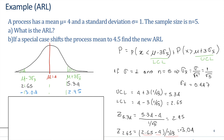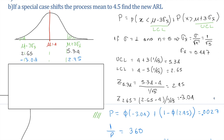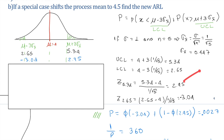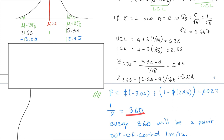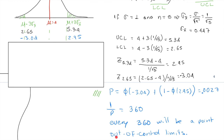The z-value for 2.65 is computed similarly: (2.65 minus 4) divided by the standard deviation, which equals minus 3.04. The probability is Φ(−3.04) plus 1 minus Φ(2.95). Remember, from the table the value is the integral from minus infinity to a value, so for the upper control limit we use 1 minus Φ(2.95), which equals 0.0027.